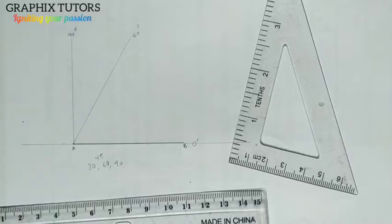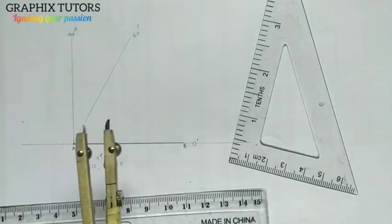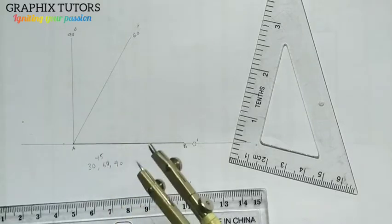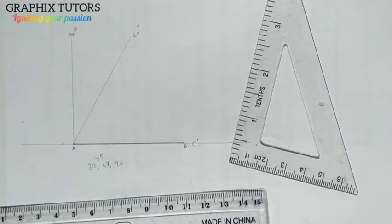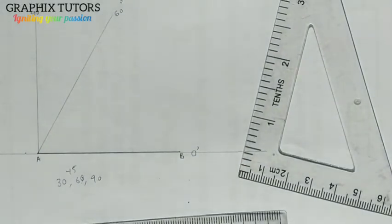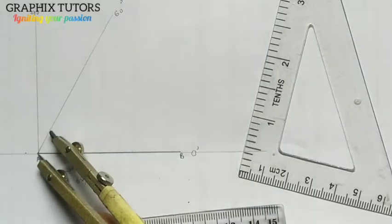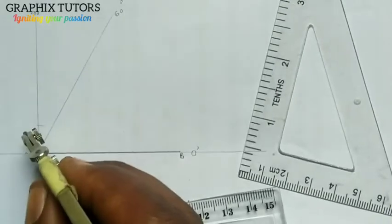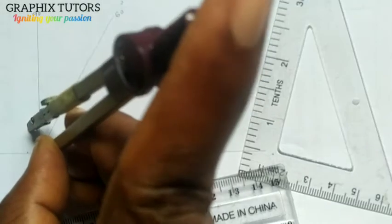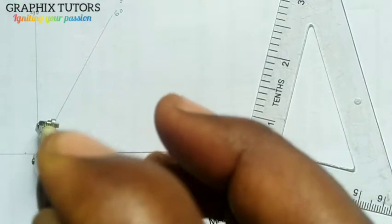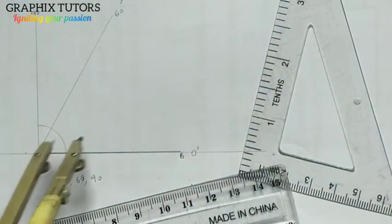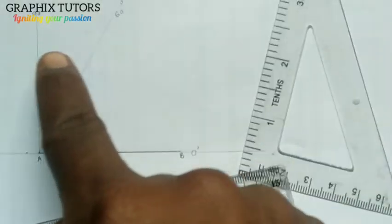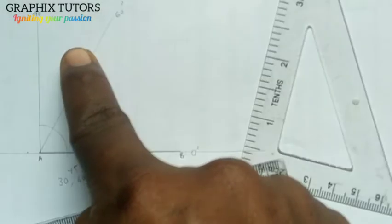So if I bisect 30, I am going to be having 15. So let's bisect 30 and I'll have 15. With your compass at any given radius, maybe 10 or 15, you place it at point A and you strike an arc this way. What you are looking for is that 67 and a half falls in between these two domains here.